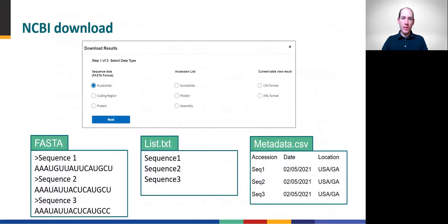Like GISAID, NCBI allows downloading the selected records in a few different formats. Download the consensus viral genome sequences in standard FASTA format for analysis with many phylogenetic software tools. NCBI also allows downloading only the annotated gene or predicted protein sequences, also in FASTA format. Or download a list of selected accession numbers to share with your bioinformatics colleagues, or download a comma-separated metadata table with specimen information similar to what's shown in the table used for making the selection.